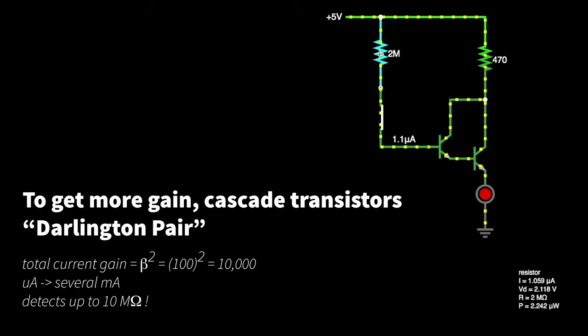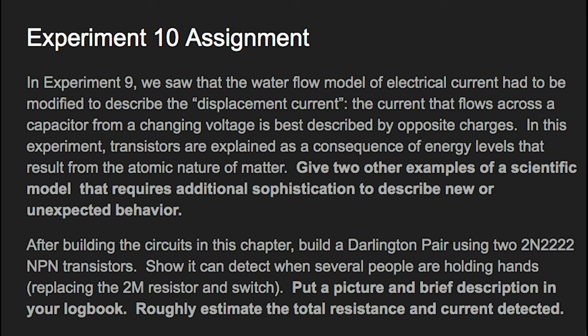And then finally through the 470 ohm current limiting resistor for the LED, the current is flowing very large. We have milliamps of current enough to light up that LED. So here's the assignment for experiment 10.